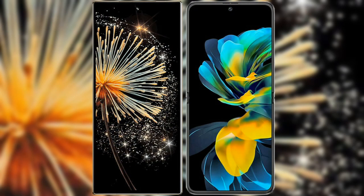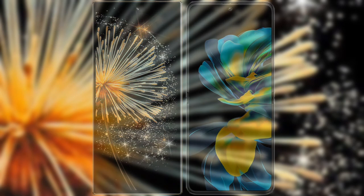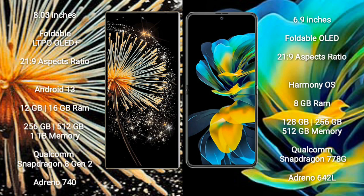I will compare the new Xiaomi Mix Fold 3 with Huawei Pocket S. Xiaomi Mix Fold 3 comes with an 8-inch foldable LTPO OLED Plus display with an aspect ratio of 21.9. Huawei Pocket S comes with a 6.9-inch foldable OLED display and an aspect ratio of 21.9.